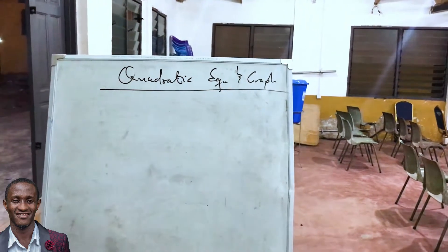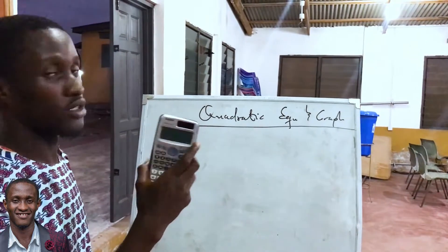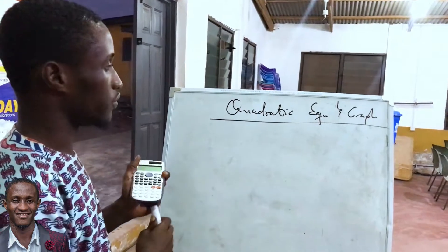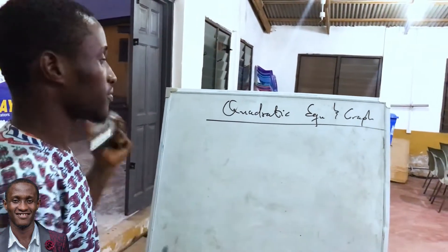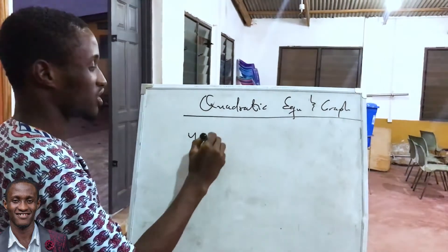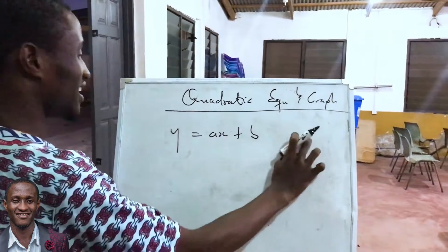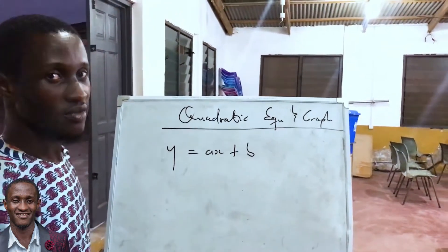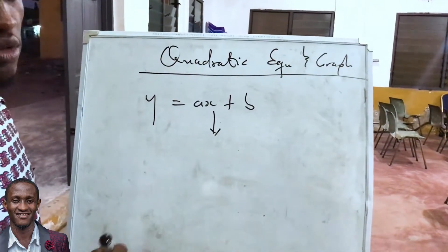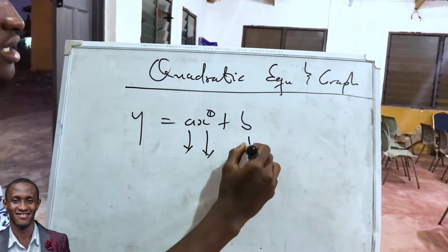We want to look at the quadratic equation, the quadratic graph, and also calculator tricks with respect to the quadratic equation. In this video we are going to focus on the quadratic equation. We know the equation of a line — the linear equation — has only one variable x with an exponent of one, its coefficients, and a constant.